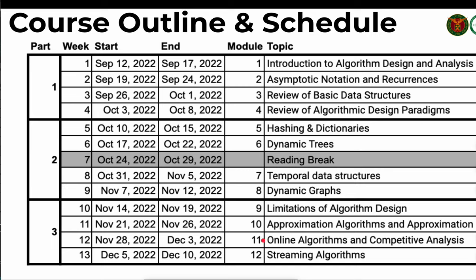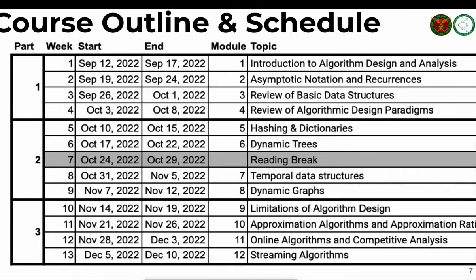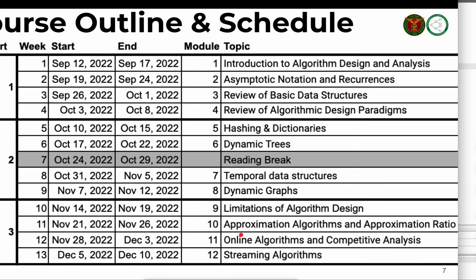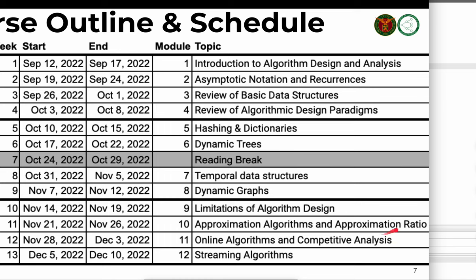For hard problems, sometimes we can settle for a good enough solution. Algorithms that provide guaranteed-quality solutions are called approximation algorithms, and the approximation ratio measures the solution quality. If the running time is too long and no faster algorithm can exist, sometimes we sacrifice solution quality. Many approximation algorithms use basic algorithmic design paradigms. That's module 10.